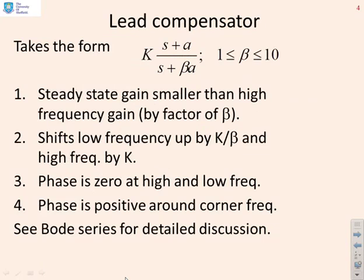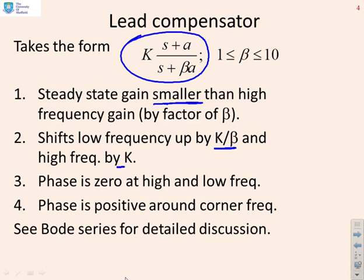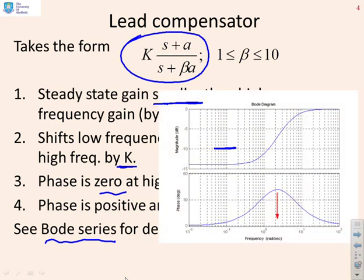So what is a lead compensator? The lead compensator takes the form K(s + A) / (s + βA), where β is bigger than 1 and typically less than 10. The steady state gain is smaller than the high frequency gain by a factor of β, so the low frequency gain is K over β and the high frequency gain is K. The phase is zero at high and low frequencies, and the phase is positive around the corner frequencies.